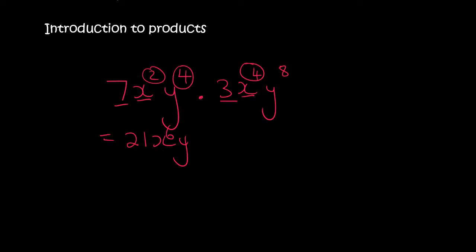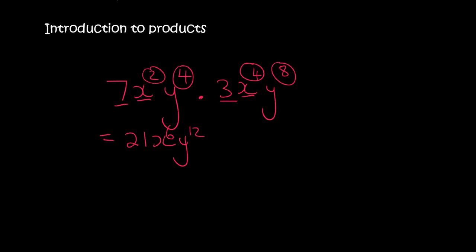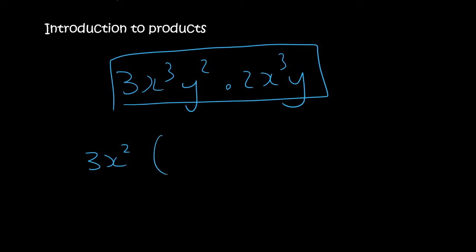Then the y's, they have exponents and you add them. So it's 12. So we are used to seeing things like this. But what's sort of new now is when we do something like this. So now this 3x squared is on the outside.